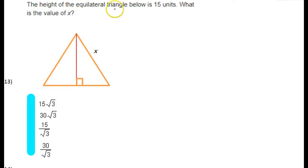The height of the equilateral triangle below is 15 units. What is the value of x? So they're telling us that this length is 15 units, the height, and we're supposed to find x.